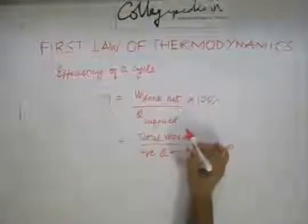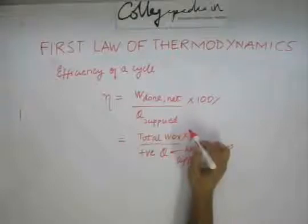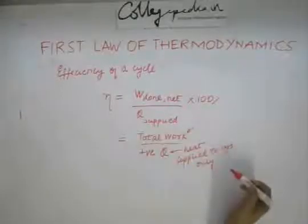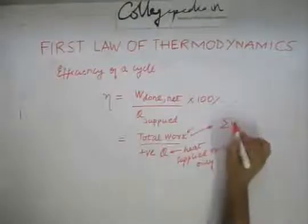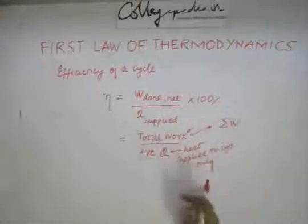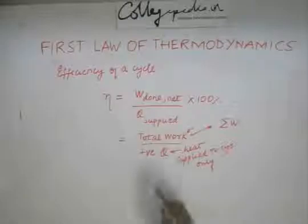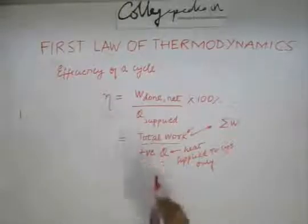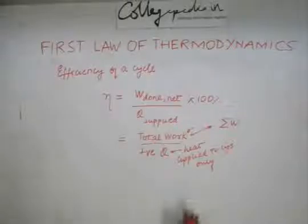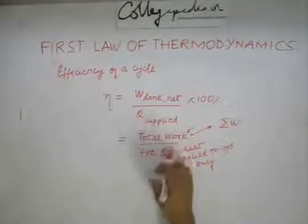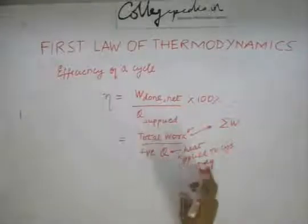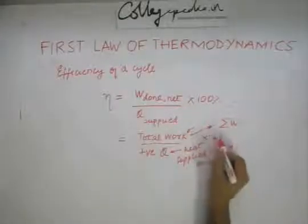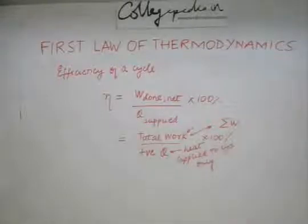Do not confuse yourself when writing the expression for total work and heat supplied. Always remember: the numerator is the sum of all work — positive and negative — entering or leaving the system. However, the denominator q is only the heat supplied to the system; you do not include any negative q there. Multiplied by 100, this gives the percentage efficiency.